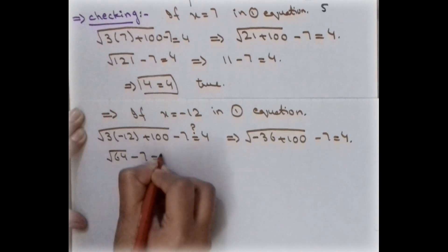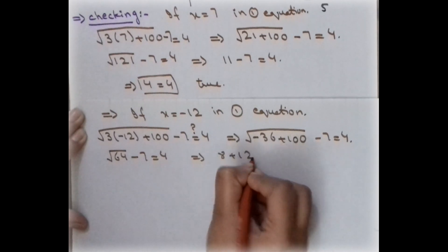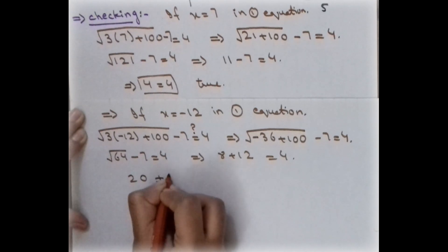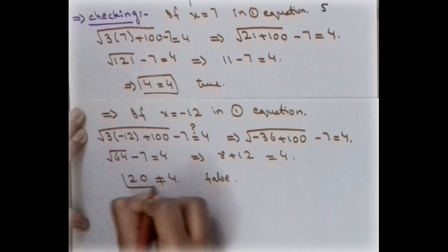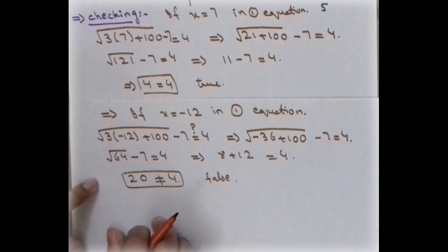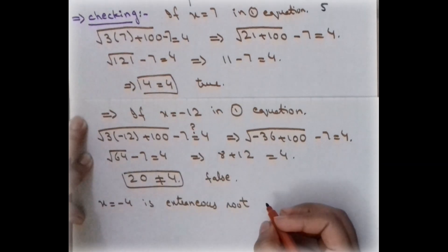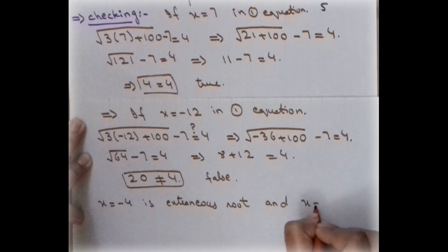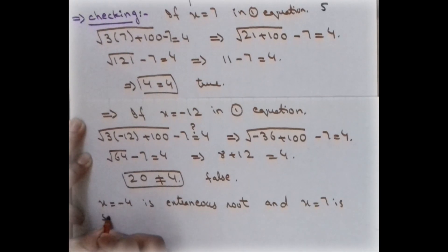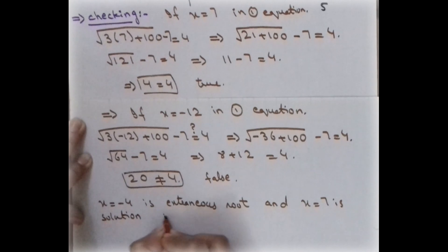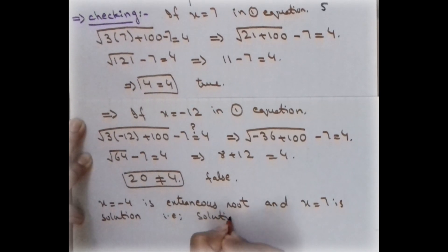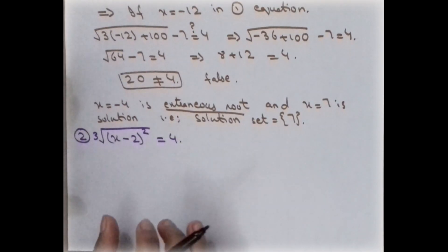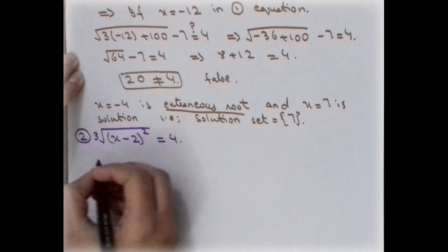For x = −12 in the original equation: √(3×(−12) + 100) = −12 + 4, which gives √(−36 + 100) = −8, so √64 = −8, meaning 8 ≠ −8. This is false. So x = −12 is an extraneous root — it does not satisfy the original equation. Therefore x = 7 is the only solution, and the solution set is {7}.